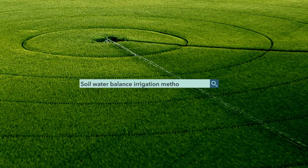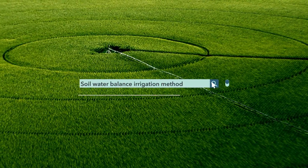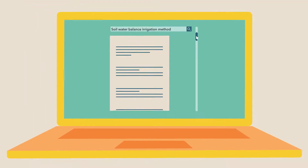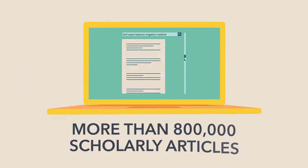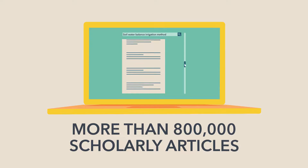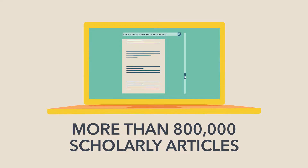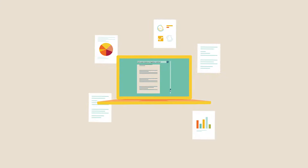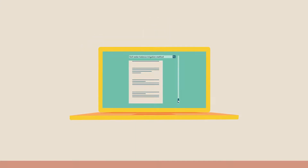If you do a Google search for the Soil Water Balance Method of Irrigation Scheduling, you'll get over 2 million results, including more than 800,000 scholarly articles. The Soil Water Balance approach is one of the most studied and proven methods for tracking crop water needs and developing an irrigation schedule.